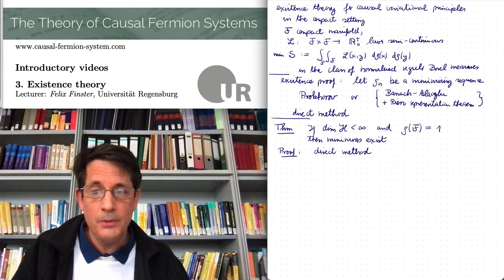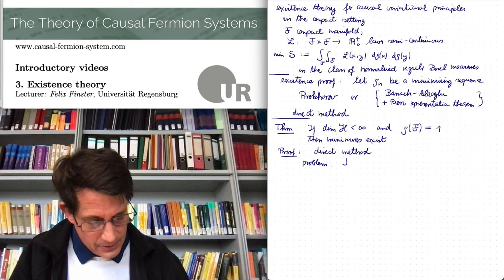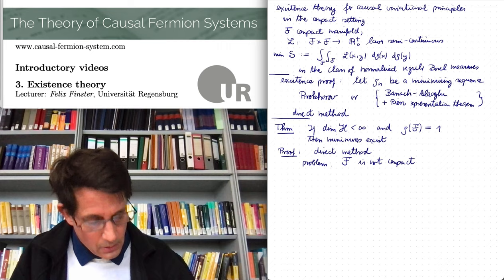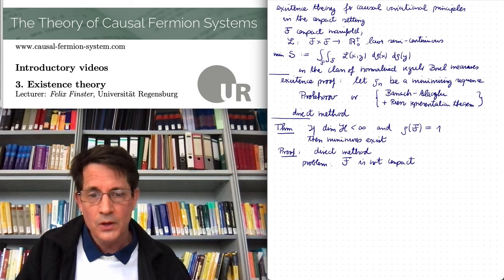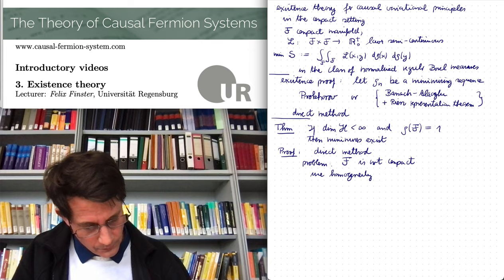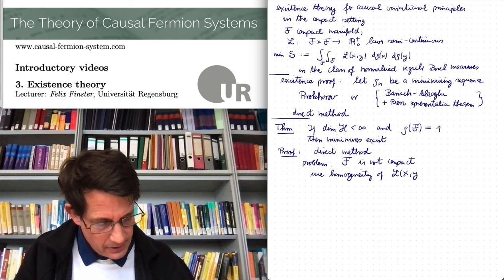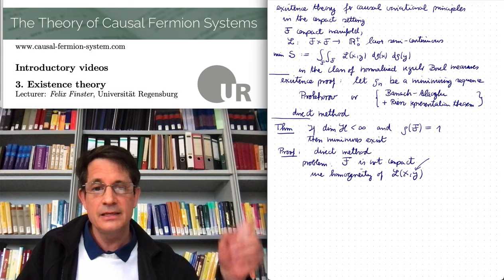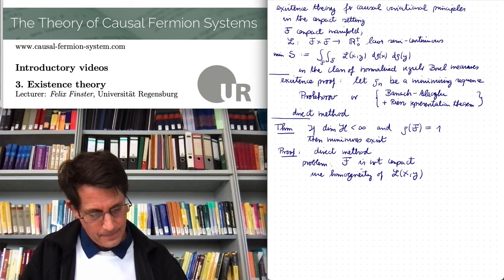However, there is a problem. Namely, the set curly F is not compact. Right? So it's unbounded. And the way out is not to work directly with the measure rho. But instead one uses the homogeneity of the Lagrangian. So the homogeneity of L. So let's write it more specifically. I mean if I multiply for example the operator Y by a constant, then the Lagrangian is homogeneous of degree 2 in this constant. So the Lagrangian is just C squared times the original Lagrangian. This can be used.